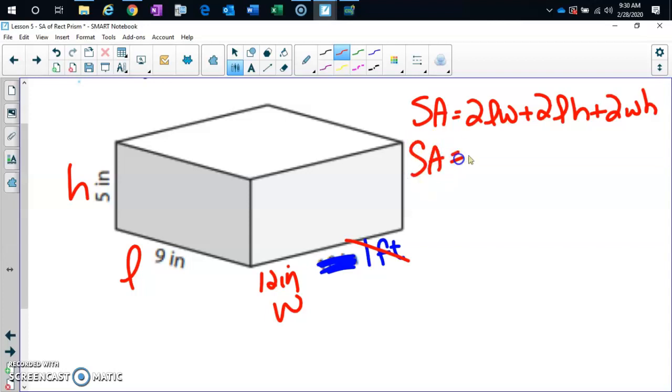So make sure you label them. So our surface area is two times—when they're right next to each other, it means times. Length, I called 9. Times width, I called 12. Plus two times. Length is 9. Height is 5. Plus two times. Width is 12. Height is 5. Now guys, I would punch that into my calculator exactly as it is. But you need to be very careful. You should get surface area is 426 square inches.